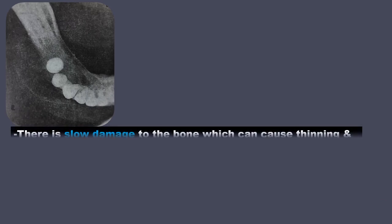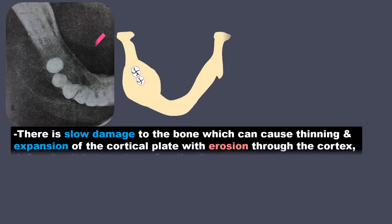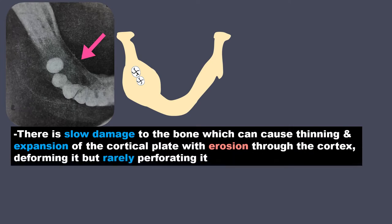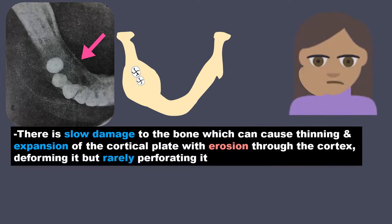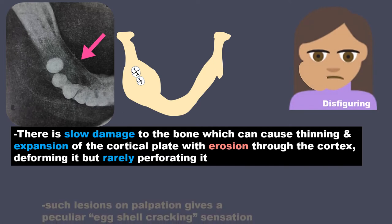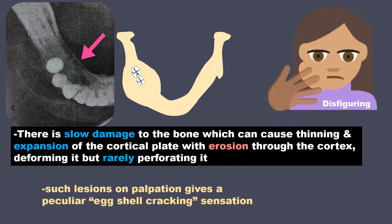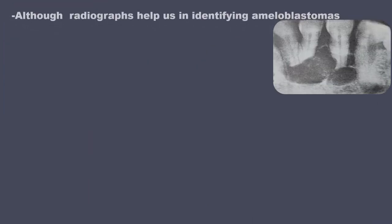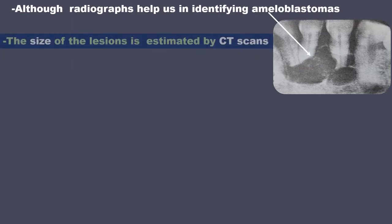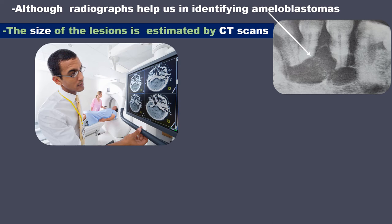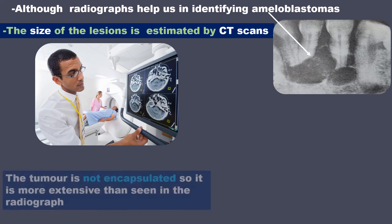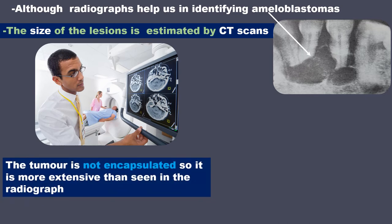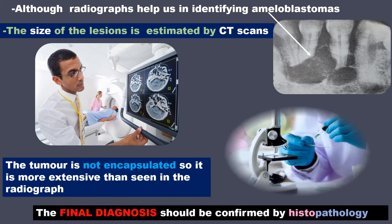There is slow damage to the bone which can cause thinning and expansion of the cortical plate with erosion through the cortex, deforming it but rarely perforating it. This shows up as a big swelling of the face, and on palpation such lesions give a peculiar eggshell crackling sensation. Although radiographs help in identifying ameloblastomas, the size of the lesion is estimated by CT scans because the tumor is not encapsulated, so it is more extensive than seen on the radiograph. Final diagnosis should be confirmed by histopathology.